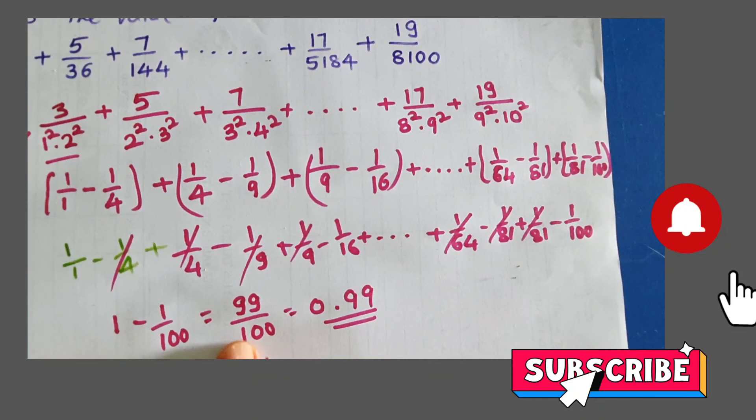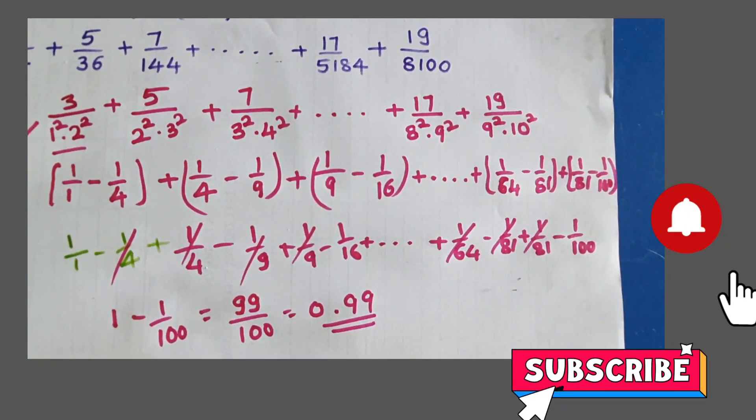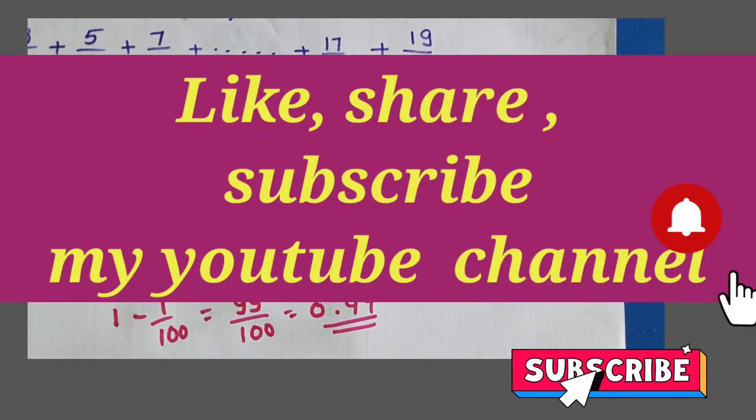Next step is to open brackets and cancel the remaining terms, leaving 1 minus 1 by 100, so 99 by 100, 0.99 is the answer. Thank you. Like, share, and subscribe to my YouTube channel.